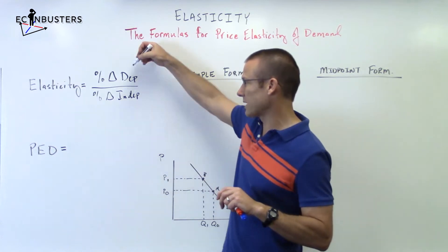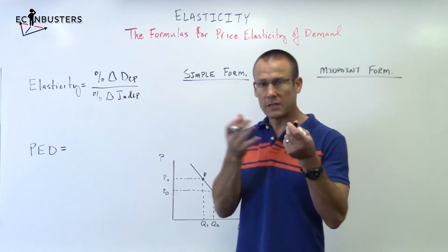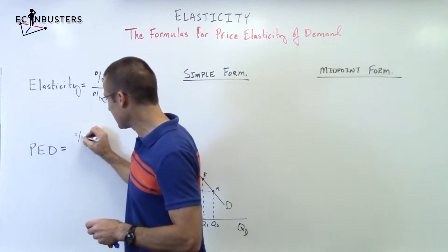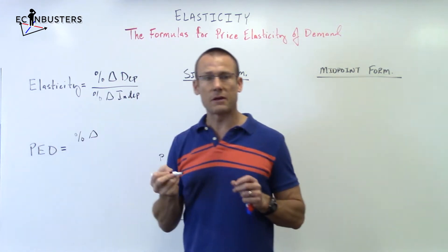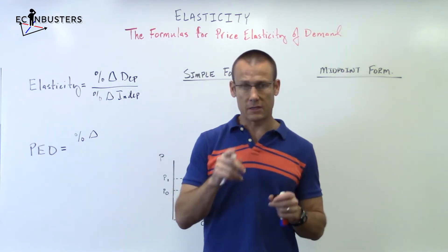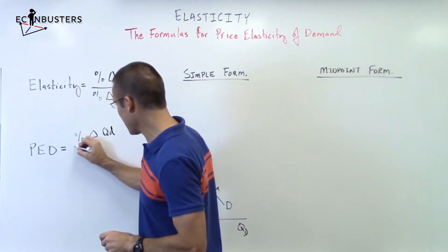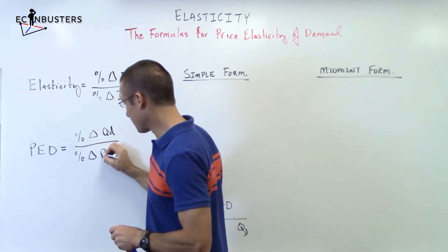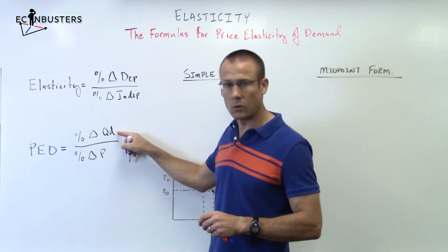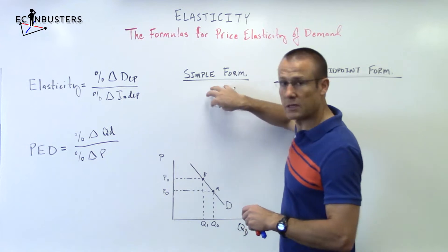You just have to ask: what's the dependent variable and what's the independent variable, and you've got the formula. So what is the formula for price elasticity of demand? It is percent change in the dependent variable. Is price dependent on quantity demanded, or is quantity demanded dependent on price? The key is: quantity demanded is dependent on price. So the dependent variable is quantity demanded — percent change in quantity demanded over percent change in price.